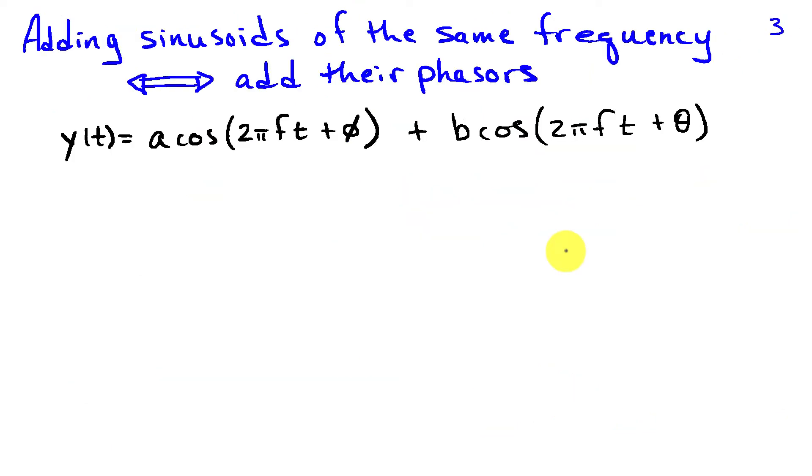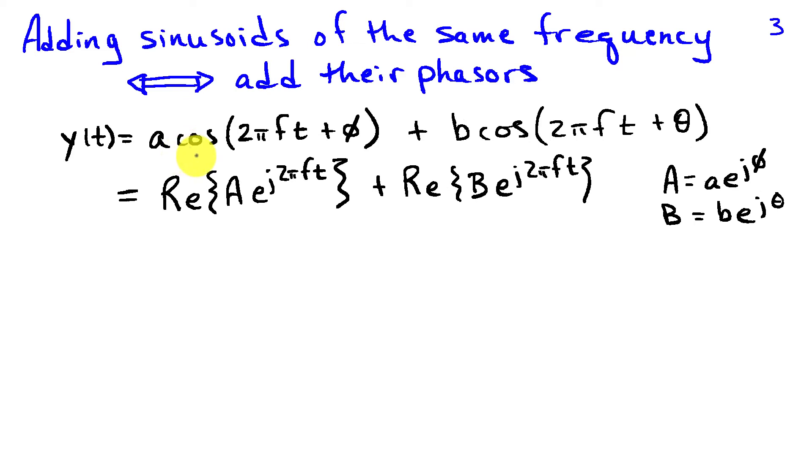We'll derive that in the case of two sinusoids. Suppose I have a signal y of t which is a sum of sinusoids, one having amplitude a and phase phi, the other of the same frequency f but having amplitude b and phase theta. I can write each of these individual sinusoids in terms of a complex sinusoid with the phasor uppercase A being a e to the j phi, the amplitude and phase of the first sinusoid, and then the second sinusoid being represented in terms of a complex sinusoid with phasor B, where B equals the amplitude lowercase b times the phase e to the j theta.